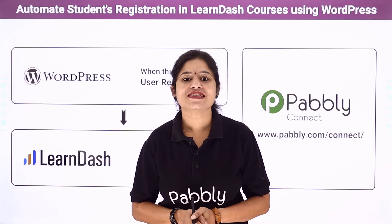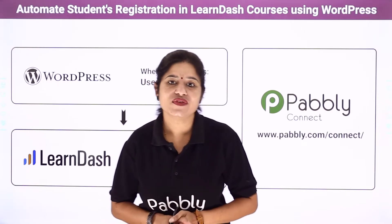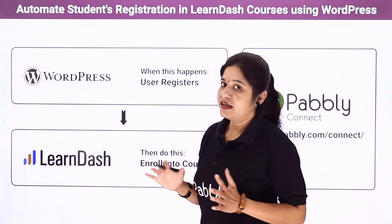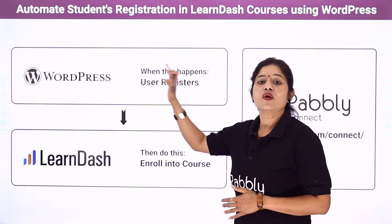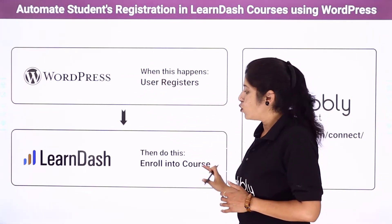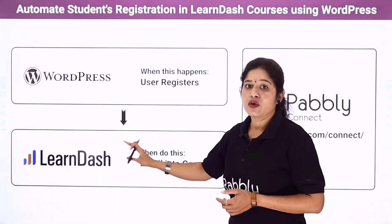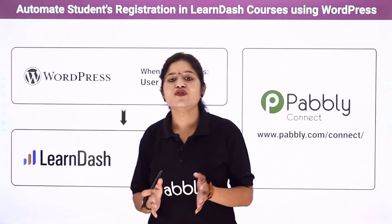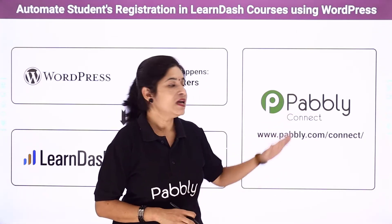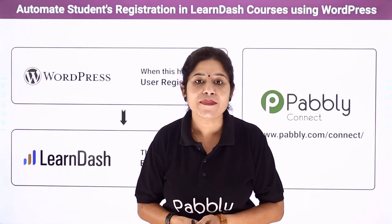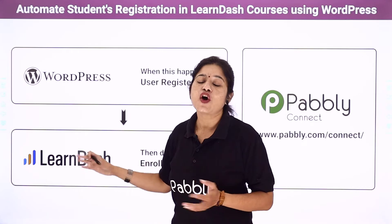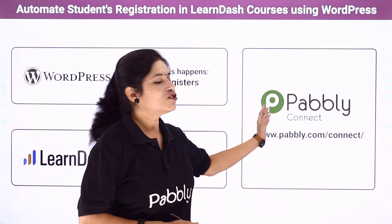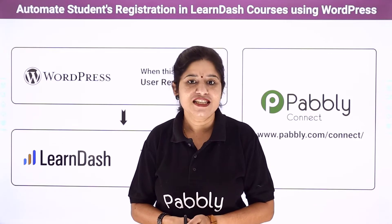Hello everyone, I am your host Ayushikara Seth here and welcome back to our channel Pabli. In this video we are going to learn how you can automate student registration in LearnDash courses using WordPress. The idea is that whenever a new user registers to your WordPress account, you want the same user to get enrolled into a specific course in your LearnDash platform. PabliConnect is an automation and integration software that will help us do this, and it doesn't require any coding skills or programming knowledge — even a non-technical person can use it very easily.